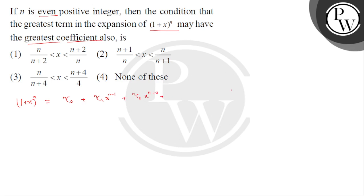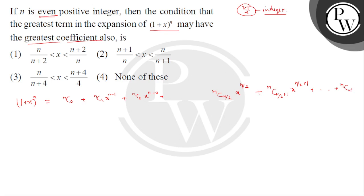Since n is an even positive integer, n/2 will be an integer. So here the middle term will be nC(n/2)·x^(n/2). And the term after it is nC(n/2+1)·x^(n/2+1), and so on up to the last term nCn·x^0. Similarly before the middle term we have nC(n/2-1)·x^(n/2-1) and so on.